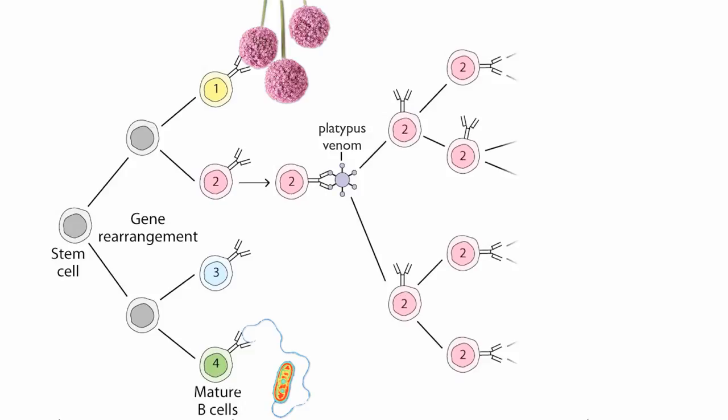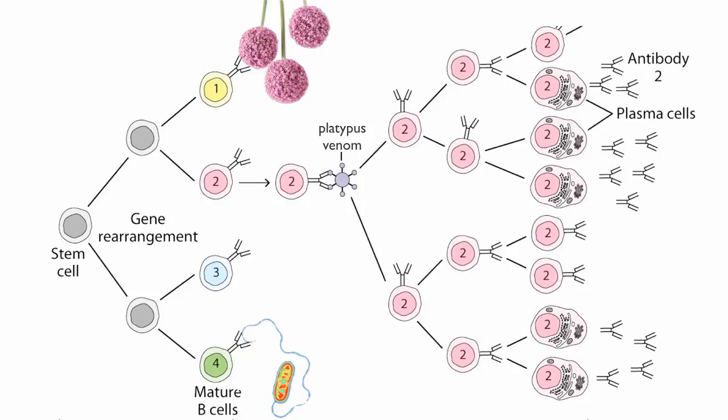Me, me, me, me, me, starts dividing like crazy, makes copies of itself, and soon you have a whole swarm of clones specialized for platypus poison protection, fending off the toxin, and you live happily ever after. That's how the immune system works.